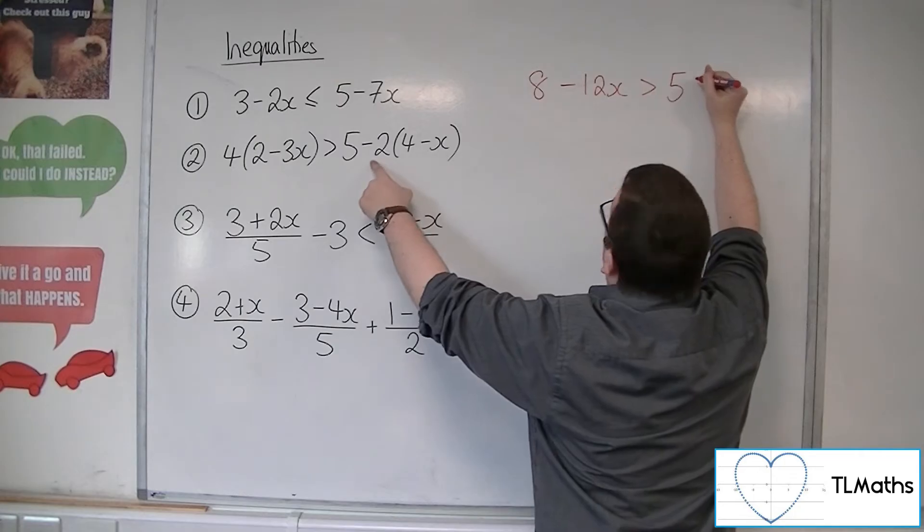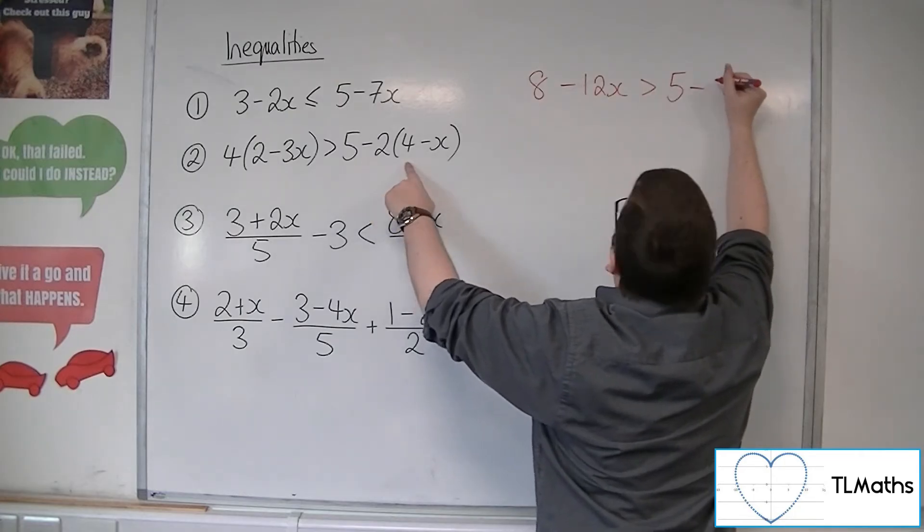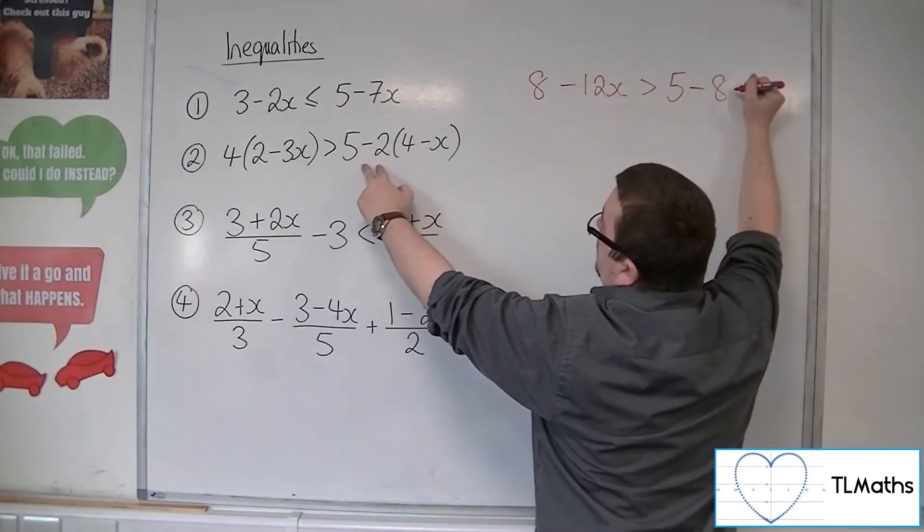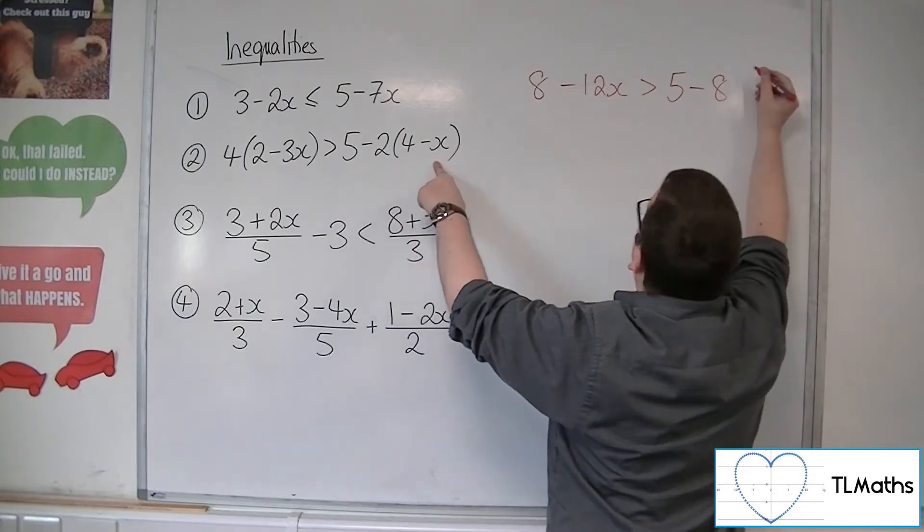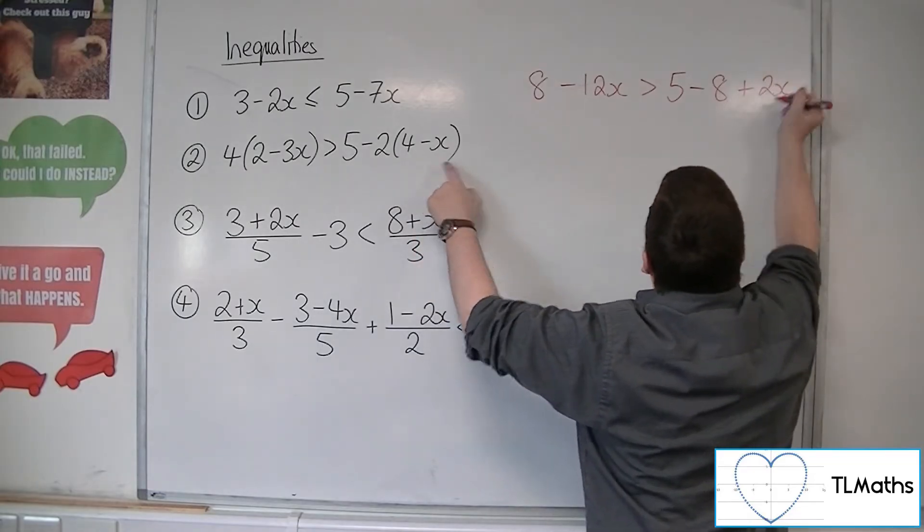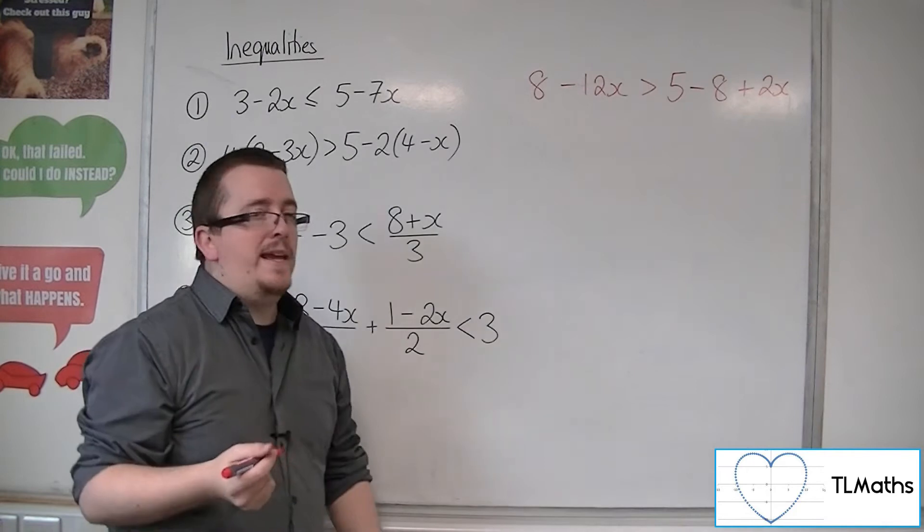That stays where it is. Minus 2 lots of 4, so 8. And then minus 2 times minus x is plus 2x. That's the bit that's going to usually catch people out.